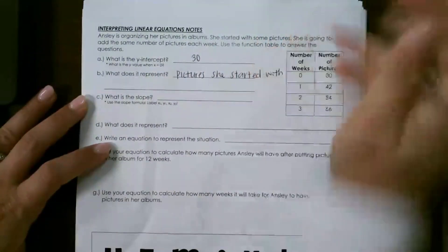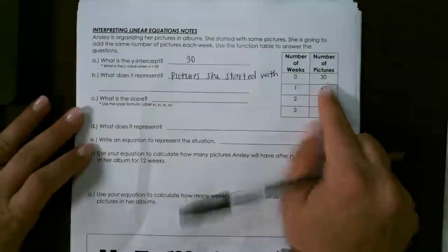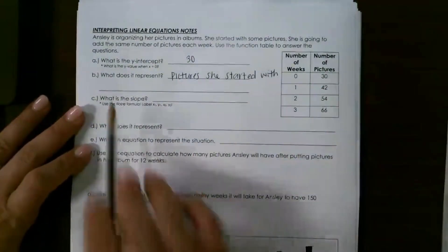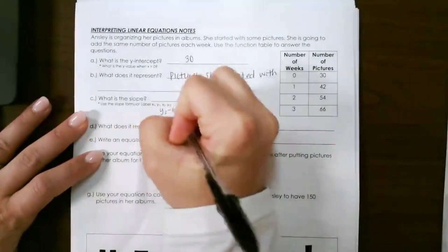And we know that because it says the number of weeks is 0, so that means she started with 30 pictures at the beginning. Then the slope - remember when we have a table we have to do y2 minus y1 over x2 minus x1.